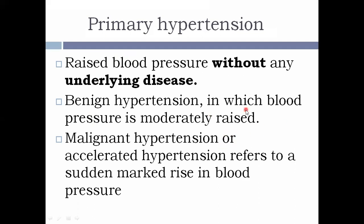In benign hypertension, the blood pressure is only moderately raised — around 145 to 150 mmHg systolic. If left untreated, it might lead to cardiac and renal complications. In malignant or accelerated hypertension, the blood pressure increases suddenly with a marked rise — systolic blood pressure might even rise up to 260 or 270 mmHg. This condition is an emergency and can be disabling.